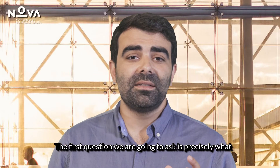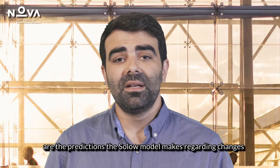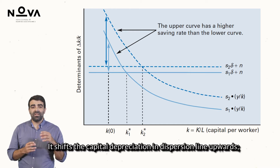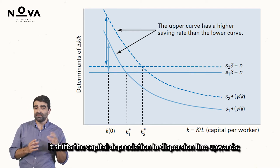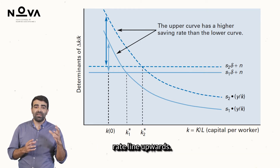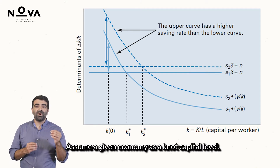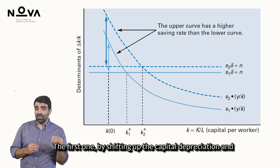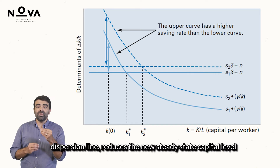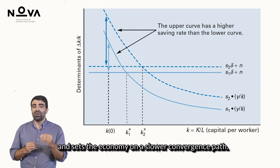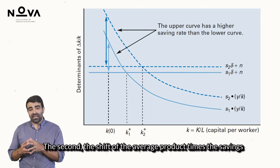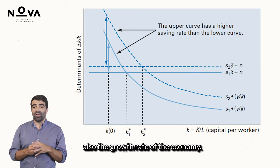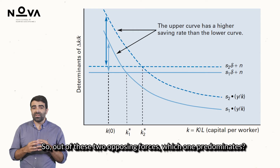The first question we are going to ask is precisely what are the predictions the Solow model makes regarding changes in savings rates. As we can see in the plot, a change in the savings rate has two effects. It shifts the capital depreciation and dispersion line upwards, and it also shifts the average product of capital times the savings rate line upwards. Notice that each effect goes in the opposite direction. The first, by shifting up the capital depreciation and dispersion line, reduces the new steady-state capital level and sets the economy on a slower convergent path. The second, the shift of the average product times the savings rate line upwards, increases the steady-state capital and also the growth rate of the economy. So, out of these two opposing forces, which one predominates?